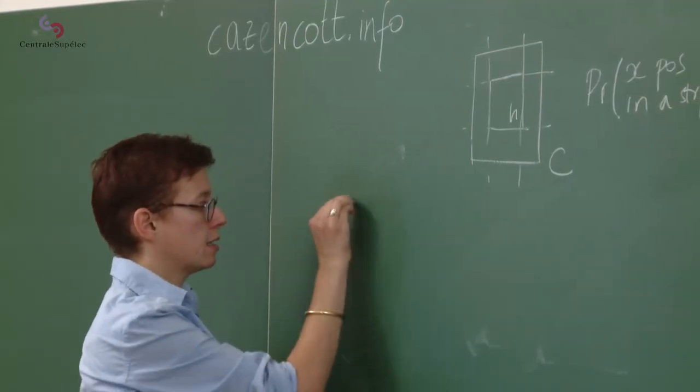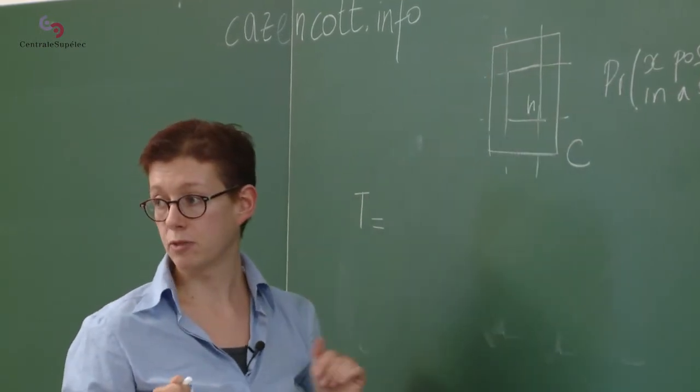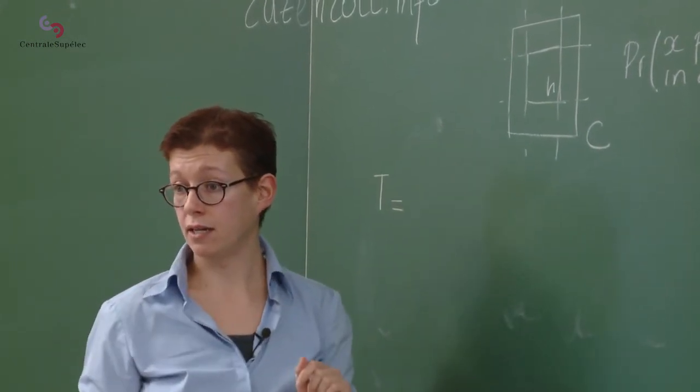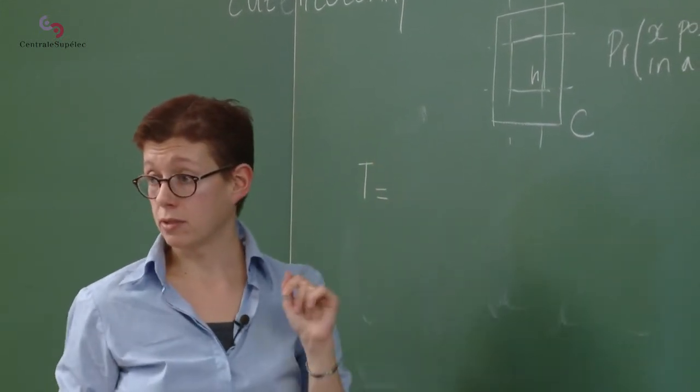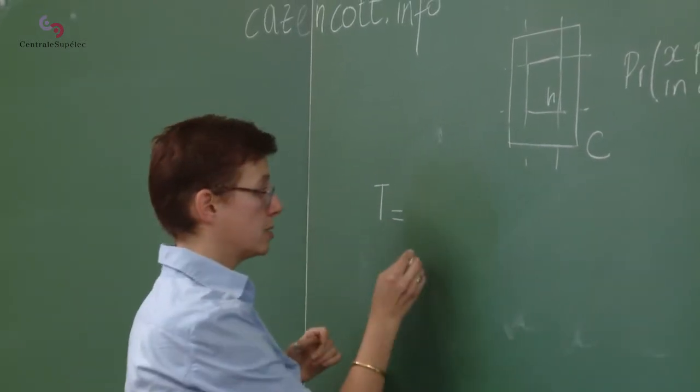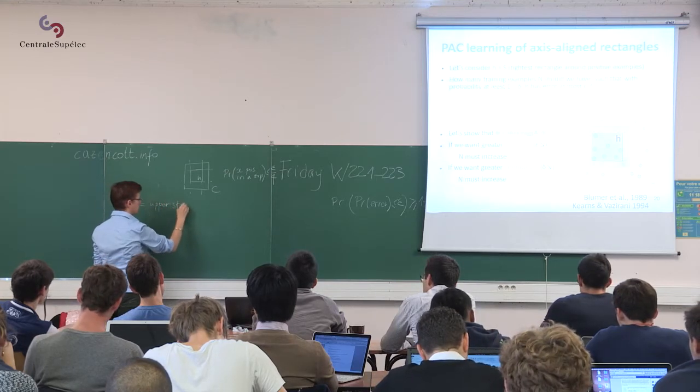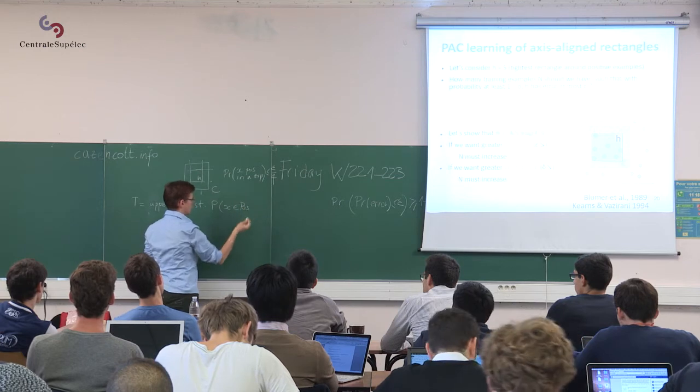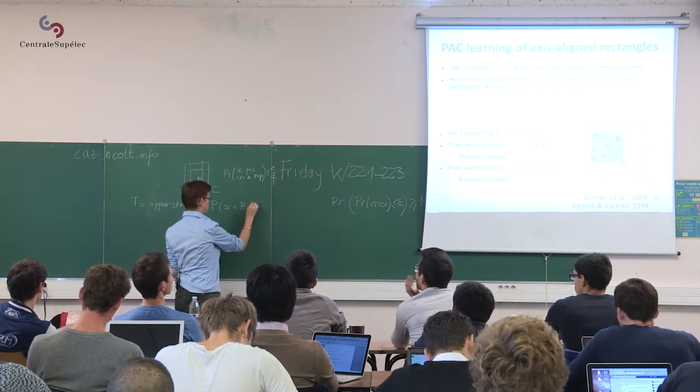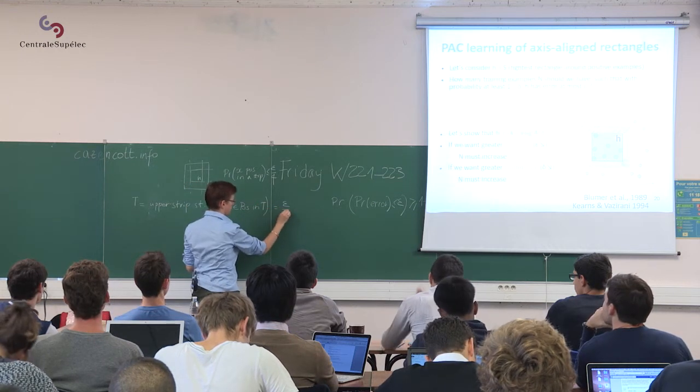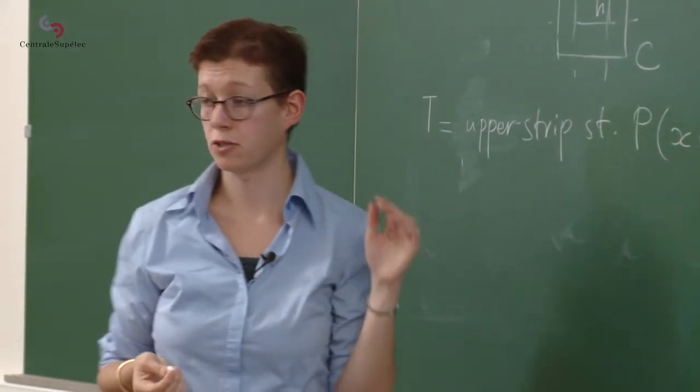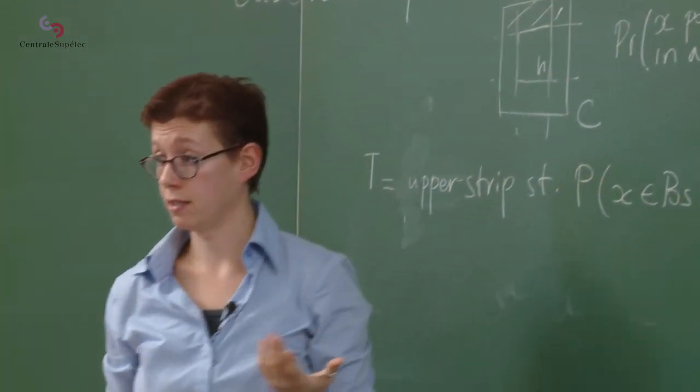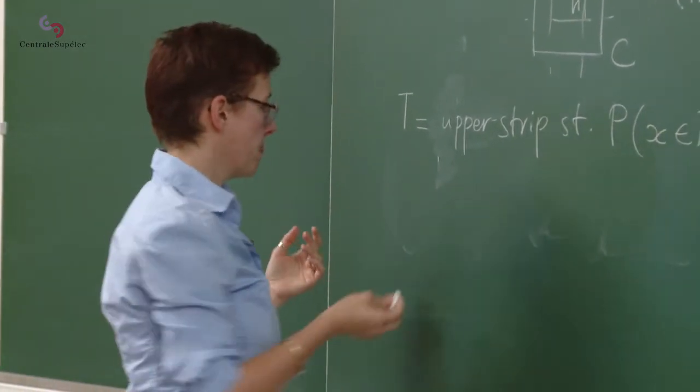I'm going to define T. I'm going to look at the top strip, and I'm going to define T as a top strip such that in C, so I don't care about H at the moment, such that the probability of putting a positive example in that strip is exactly epsilon over 4. So then I have two possibilities. Either that strip is wider than my top strip here, or it's narrower. I mean, or it's the same size, but, so we have two scenarios.